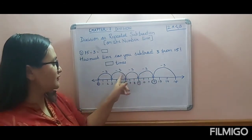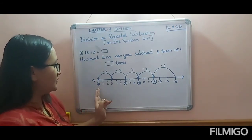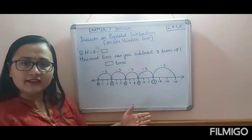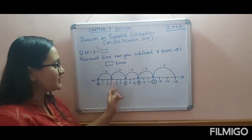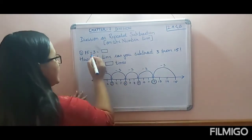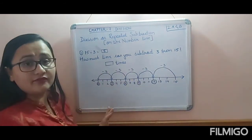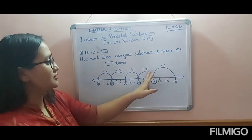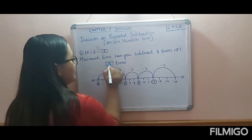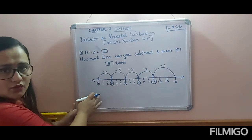From zero, count how many times you jumped: 1, 2, 3, 4, 5 — five times. Let's check with the table of 3: 3 ones are 3, 3 twos are 6, 3 threes are 9, 3 fours are 12, 3 fives are 15. So the answer is 5. You can subtract 3 from 15 five times.